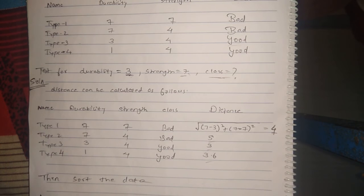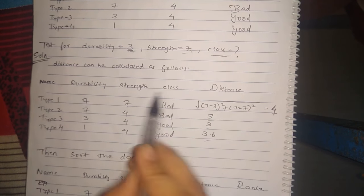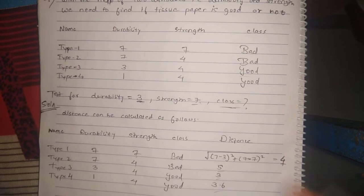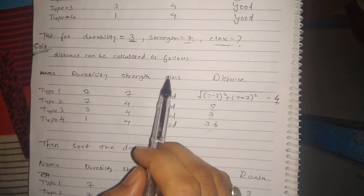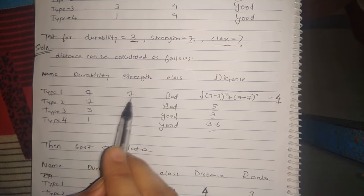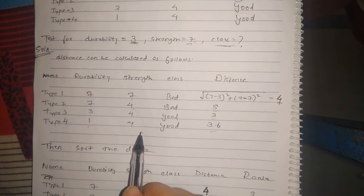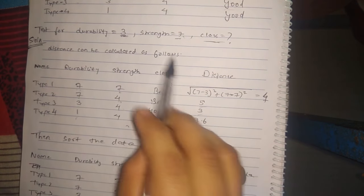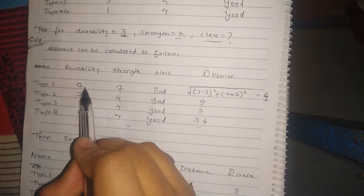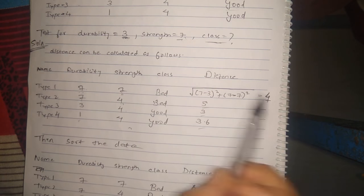We have to find the distance of point (3, 7) with each and every point in the training data set: (3,7) with (7,7), (3,7) with (7,4), (3,7) with (3,4), and (3,7) with (1,4). For example, the distance of (3,7) with (7,7) is the square root of (7−3)² + (7−7)², which equals 4.